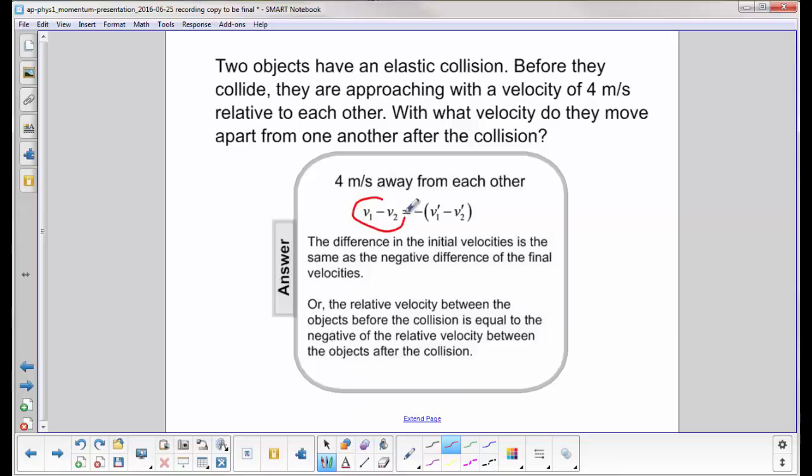This defines relative velocity. And your final relative velocity is this. You have the primes indicating final, and you take the difference of the velocities.